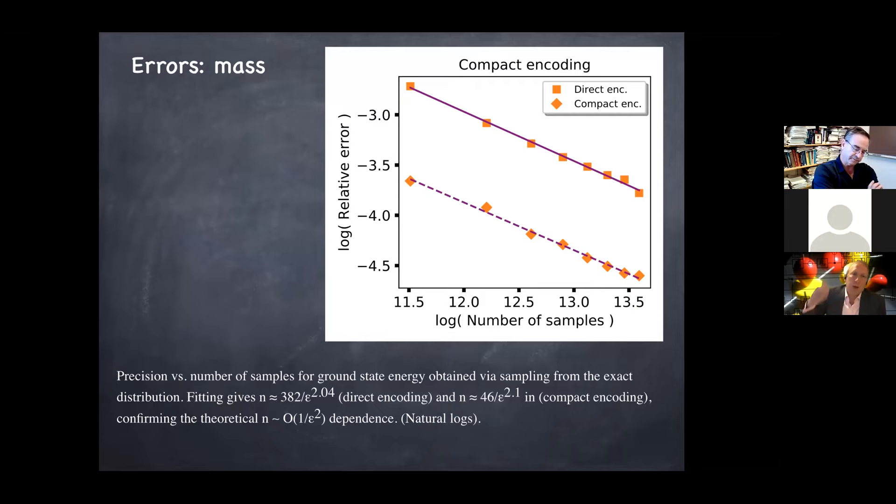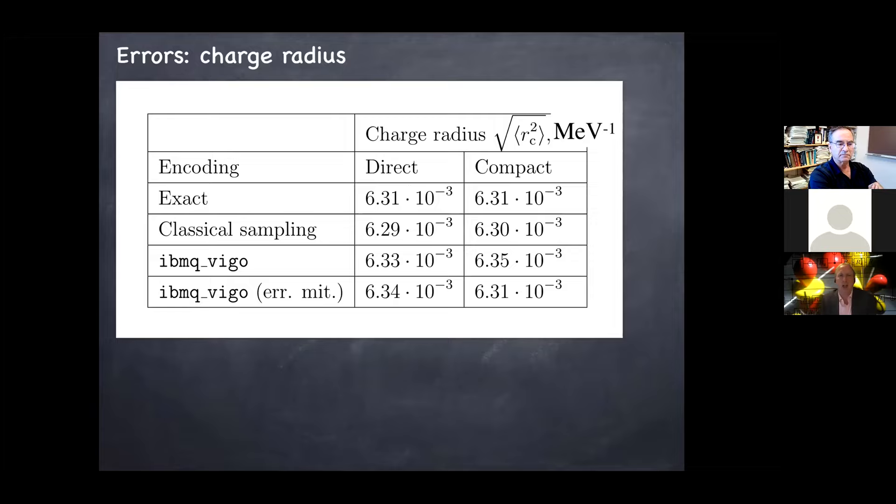You can see we're getting sort of 10 percent accuracy in the compact encoding. And if we look at the way the errors are scaling with the number of measurements we make, they scale as one over the number of measurements squared, which is what we expect. That's a basic property of VQE that just comes from statistics. These are the errors in the mass of the particle for compact and direct. You can see quite clearly that compact is better. And here we see something interesting, which is that the charge radius accuracy. So our estimate of how big the particle is, is much better than our estimate of the mass, which is kind of comical because we chose to, you know, we optimized our ansatz for the mass and we didn't do so well. We did about 10 percent in the compact mapping. But here we're doing much better in the charge of the particle, which is an illustration that, you know, the accuracy depends also on what the observable is, of course.